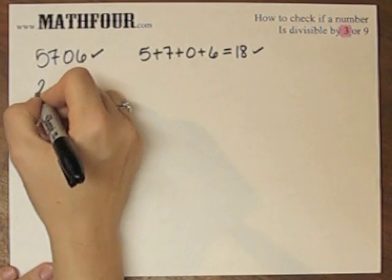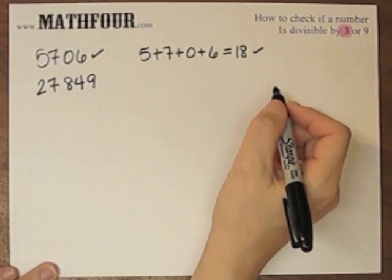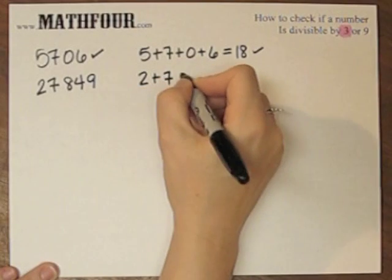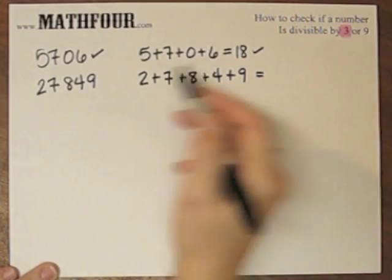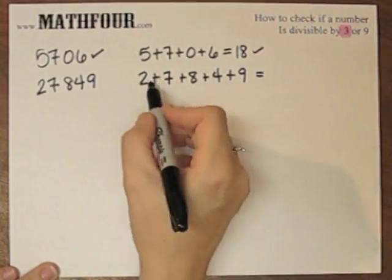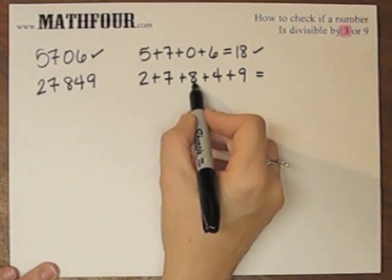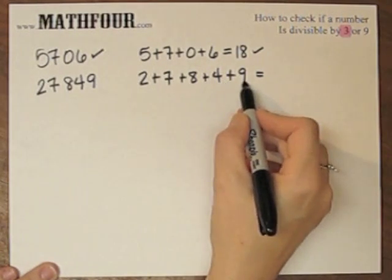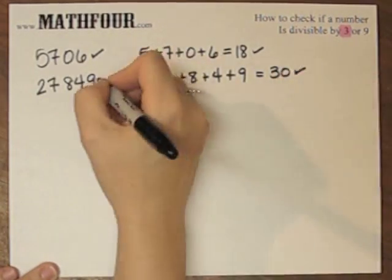We can look at 27849 and go, is that divisible by 3? So you do 2 plus 7 plus 8 plus 4 plus 9. Of course, you don't have to write it out. This is just done for the benefit of the video. So that's 9 plus 8 is 17, plus 4 is 21, plus 9 is 30. 30 we know is divisible by 3, so we're good there.